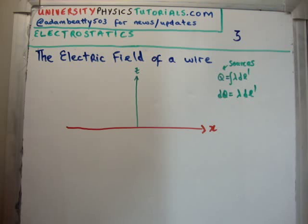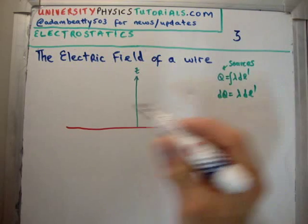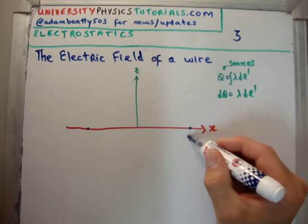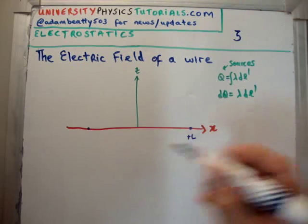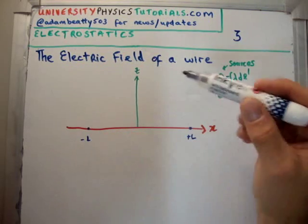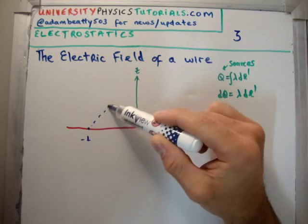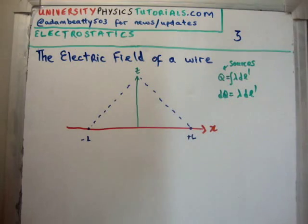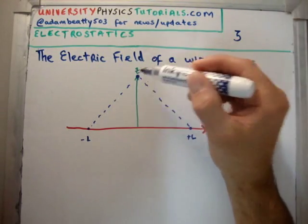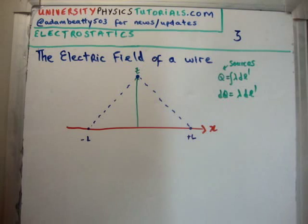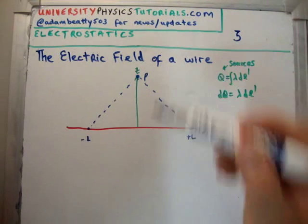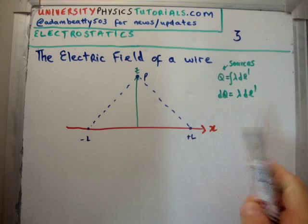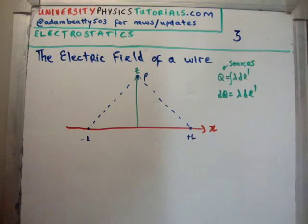I'm going to split the wire up symmetrically — from plus L to minus L. It's between plus L and minus L that I'm going to evaluate my electric field, detected at point P on the z-axis. I can move L and minus L out as far as I want to get the total field due to the wire.